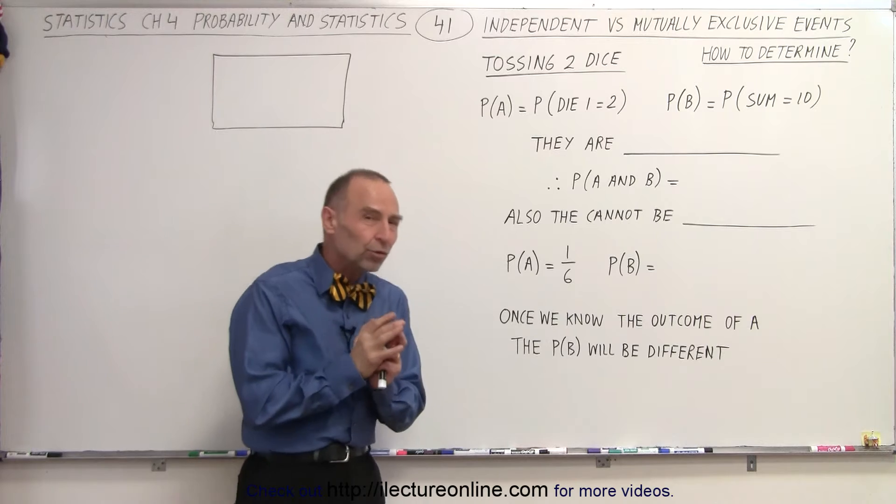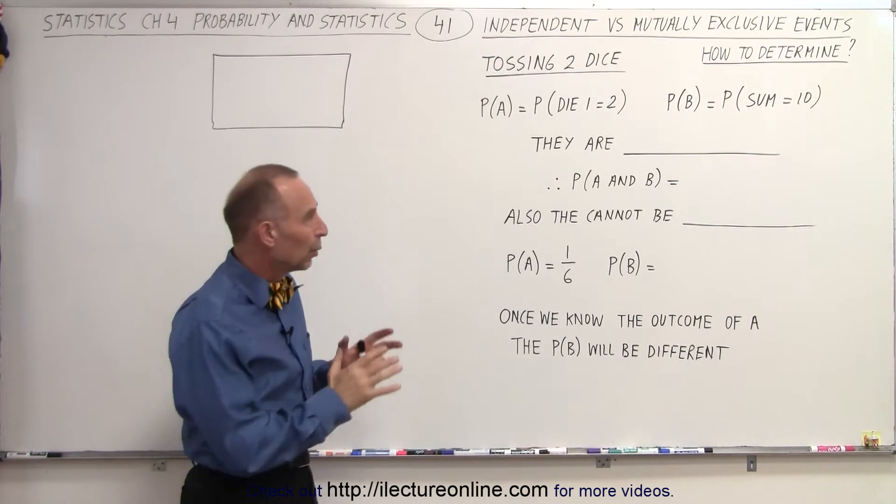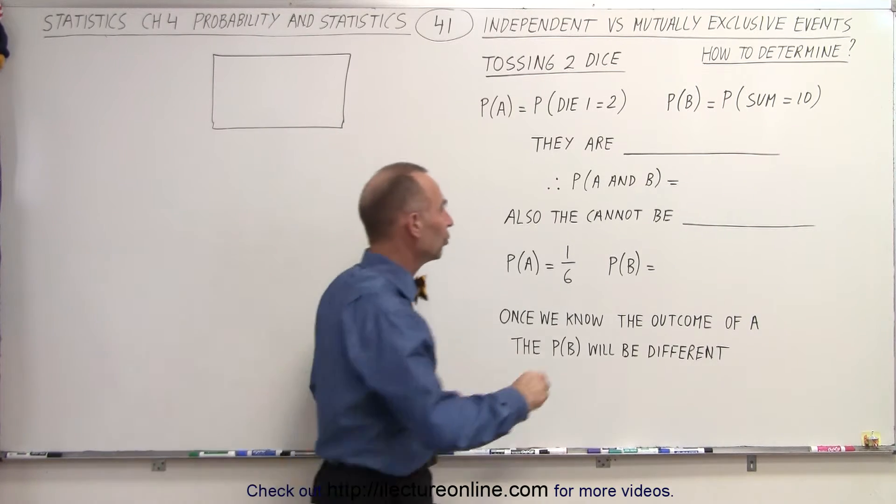Now, if one of the two dice equals 2, then there's no possible way we can have a sum of 10 with both dice together. Therefore, they are mutually exclusive.